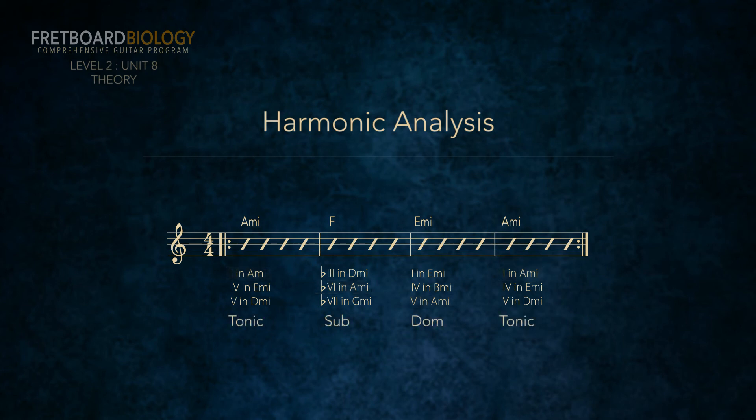A minor is a member of the tonic family. F is a member of the subdominant family — it's flat 6. E minor is 5, so it's a member of the dominant family. And A minor again belongs to the tonic family.